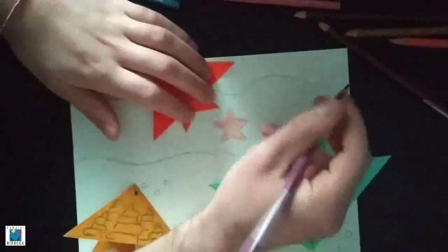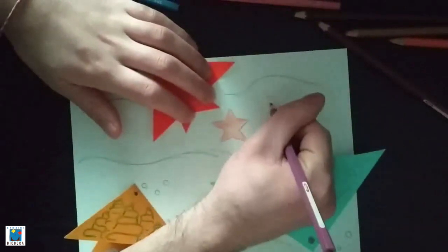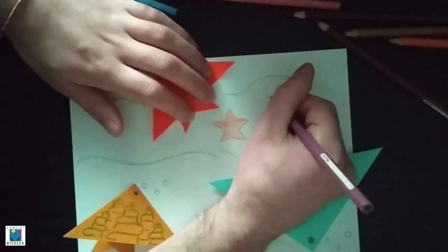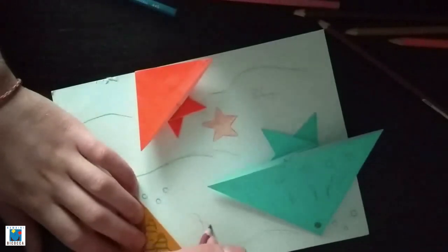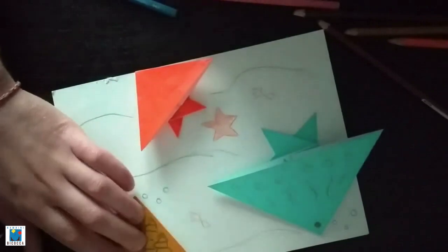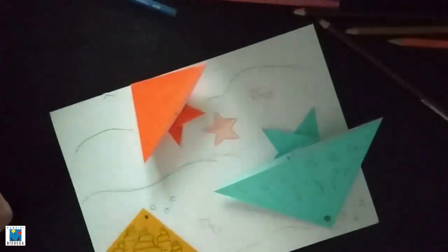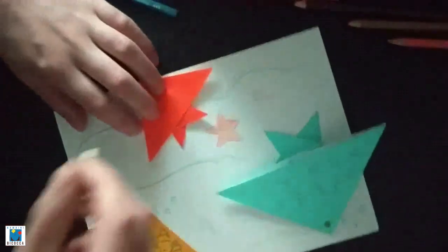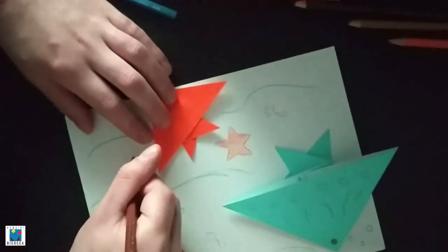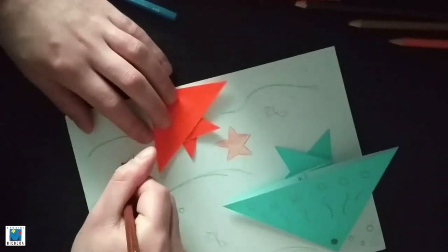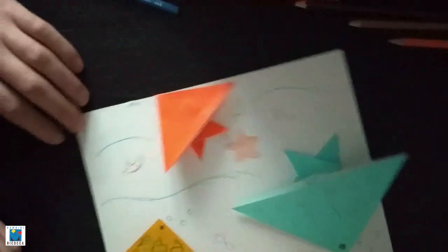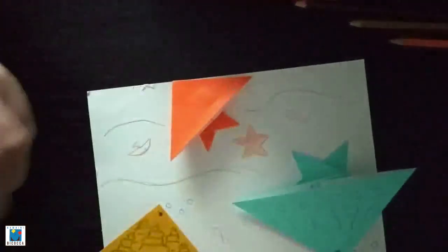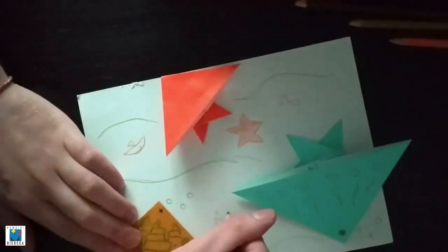Then, I'm going to draw some more fish with this purple. One here, the second one here. And I'm going to make some brown fish. It doesn't look like a fish, but for me it's a fish. And I'm gonna draw some more bubbles.